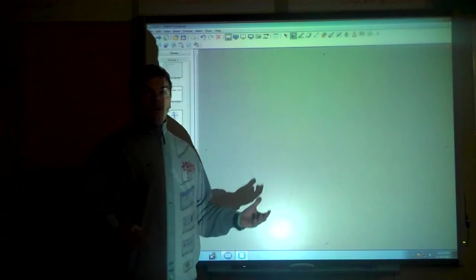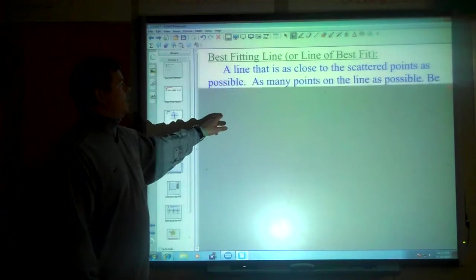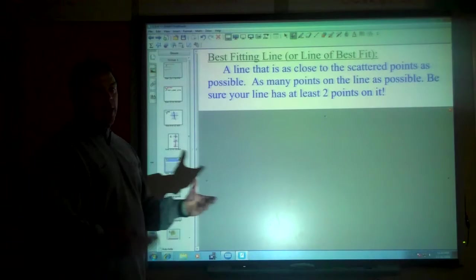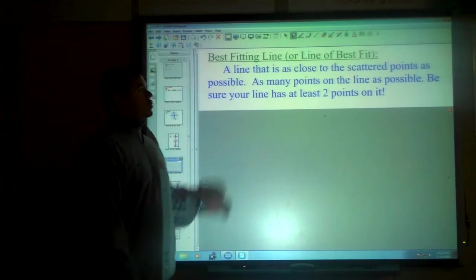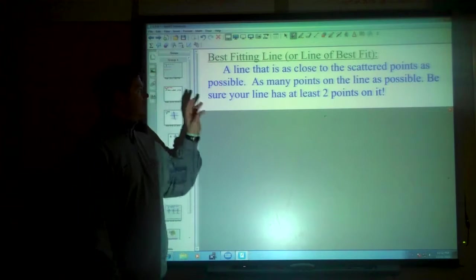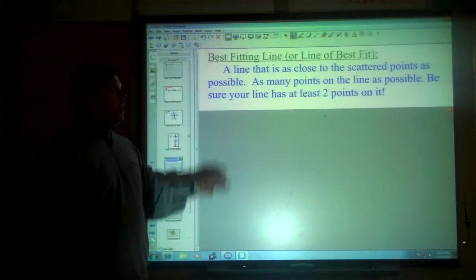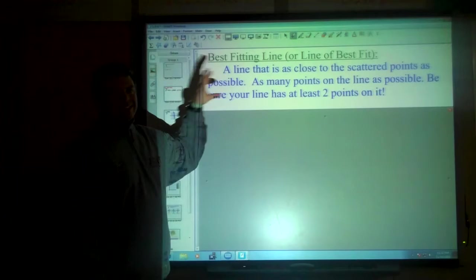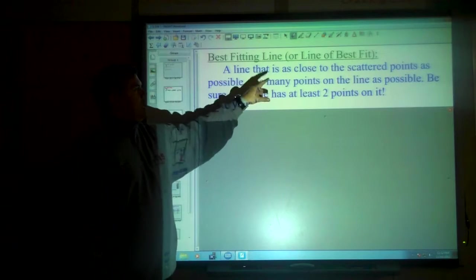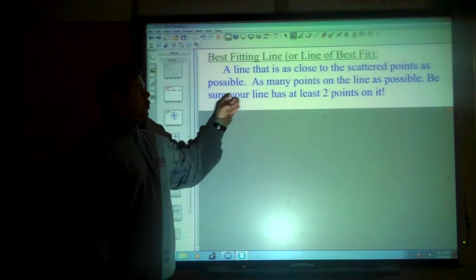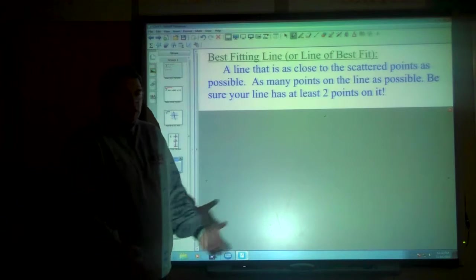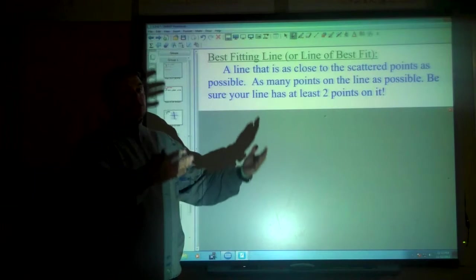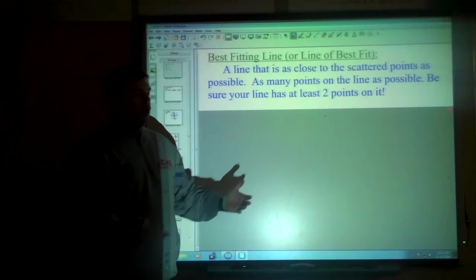Today, we use a little bit more flexibility because we're going to talk about what's called a best fitting line or a line of best fit, a line that is as close to the scattered points as possible. This is not going to mean that everybody in the room has the exact same lines. As many points on the line as possible, be sure your line has at least two points on it because without two points, we can't find the slope.